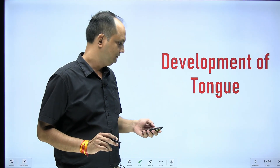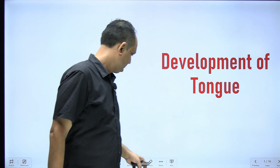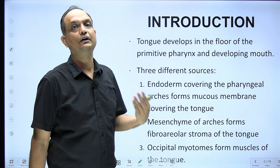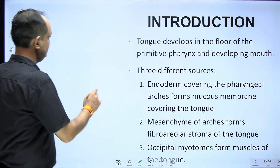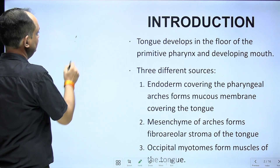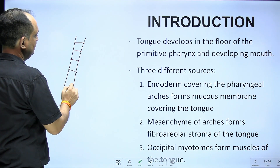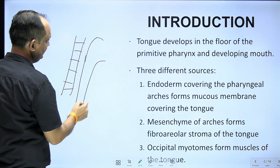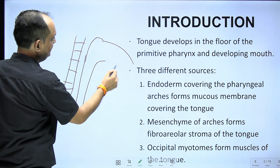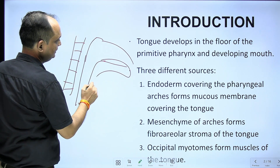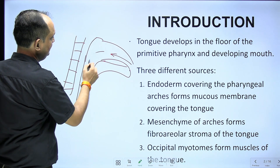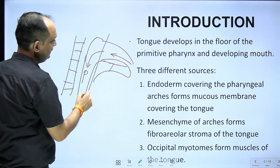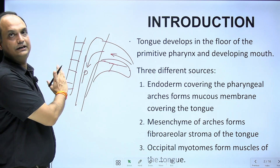When studying the development of the tongue, keep in mind that the tongue develops in the floor of the mouth and lies ventral to the pharyngeal wall. Posteriorly you have the vertebral column, in front of that is the pharynx, which is connected anteriorly with the mouth, and in the mouth you have the tongue.